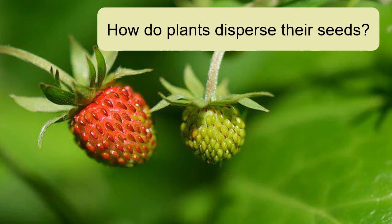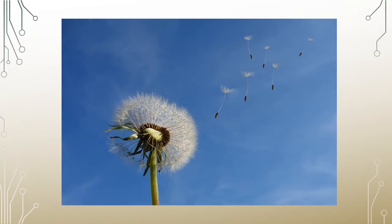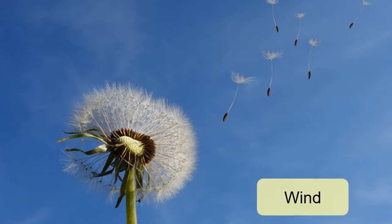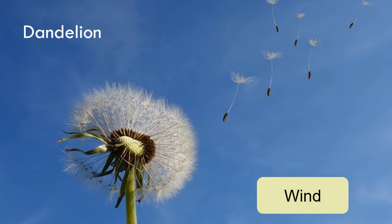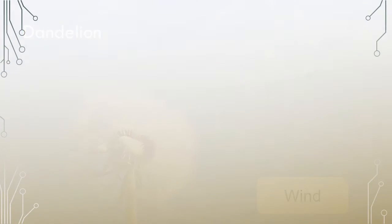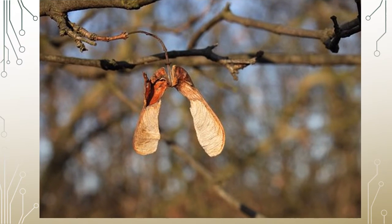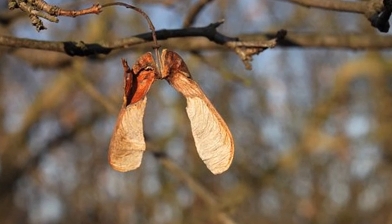So how do plants disperse their seeds? Some plants rely on the wind to blow their seeds away from the parent plant, like the dandelion seed. Some plants like a sycamore tree produce winged seeds. These spin and whirl in the air, relying on the wind to carry them away.